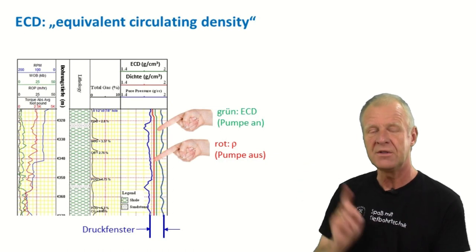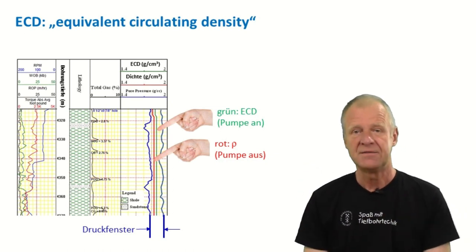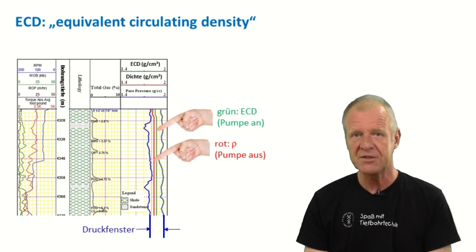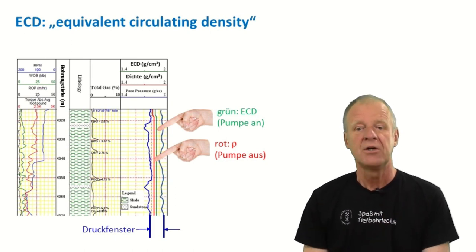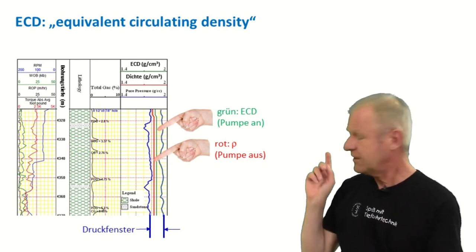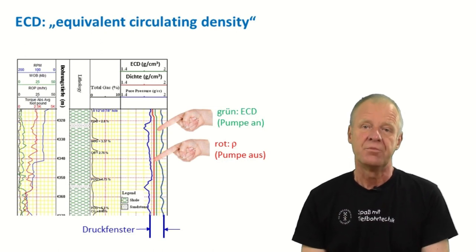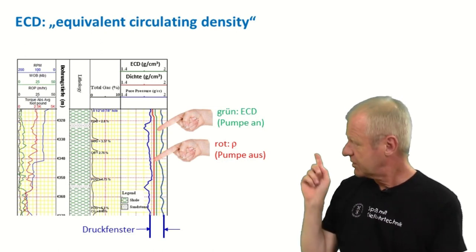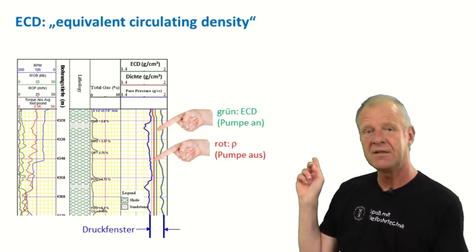which represents the pressure in the borehole when the pumps are switched on, and the red line represents the static pressure in the borehole when the pumps are switched off. Both of these curves must always stay within the narrow pressure window, which varies as we drill along the well. You can see it in the graph.